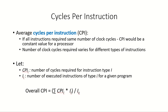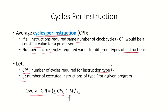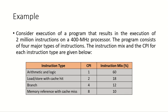Not all instructions require the same number of clock cycles, so CPI is not a constant. For different types of instructions, different numbers of clock cycles are required. For instruction type I with CPI subscript I, and II being the count of executed instructions of that type, the overall CPI is the sum of (CPI_I × I_I) divided by the total instruction count IC.